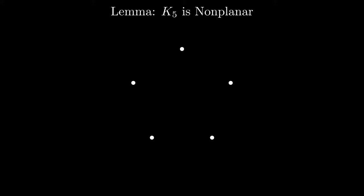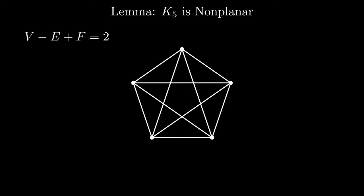The proof that K5 is nonplanar is similar. As before, we write down the known values, 5 vertices and 10 edges, into Euler's formula.